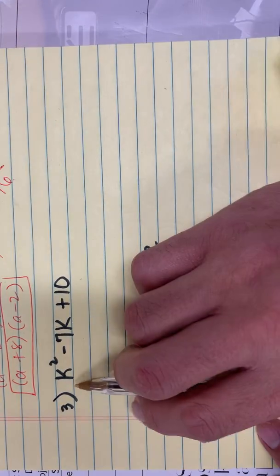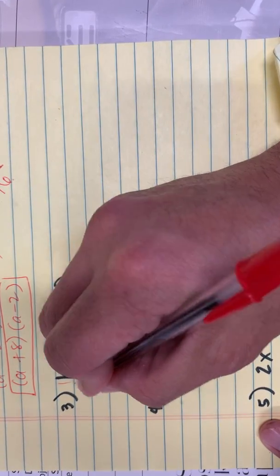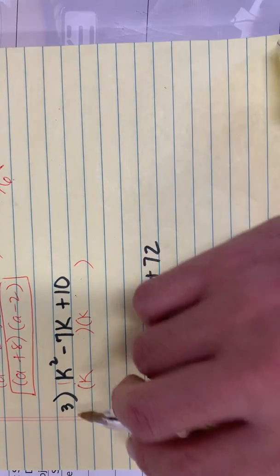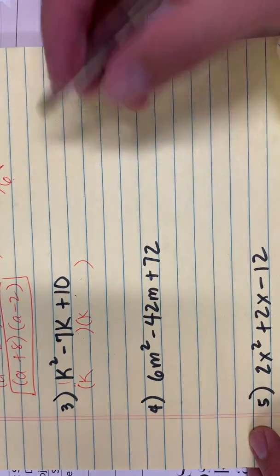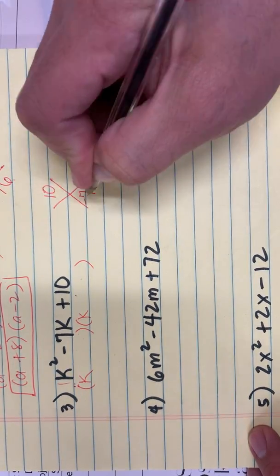Number 3: K squared minus 7K plus 10. That's already 1 there, so K and K automatically. Again, this is for baby factoring wherein K is equal to 1. You have to think of two numbers. When you multiply them it gives you 10. When you add them, it gives you negative 7.